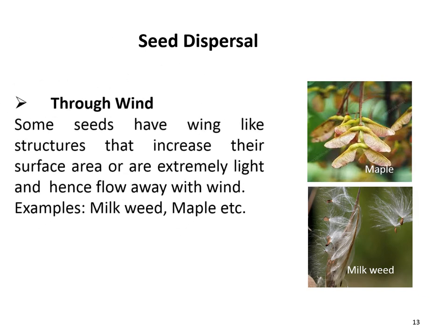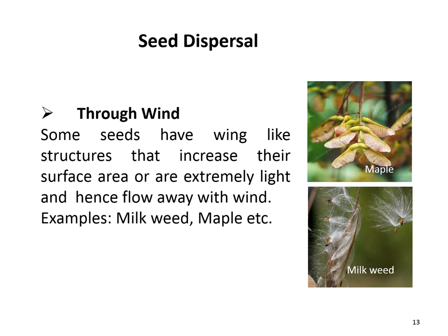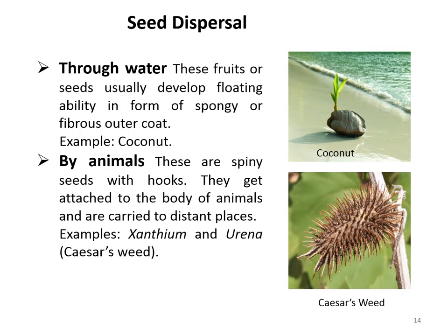Let's discuss seed dispersal through external agencies. Some seeds are dispersed through wind. These seeds have wing-like structures that increase their surface area, or are extremely light, and hence flow away with the wind. Examples include milkweed and maple seeds. Some seeds are dispersed by water. These fruits or seeds usually develop floating ability in the form of a spongy, porous, or fibrous outer coat — for example, the coconut.